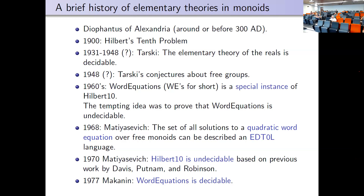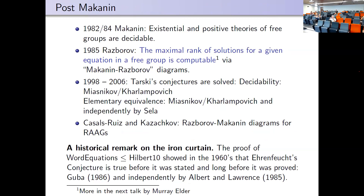Matiasevich had never heard of EDT0L — the notion wasn't defined yet — but if you look at his proof, that's really the first simple case where you can show the solution set is EDT0L. Then, at age 22, he proved Hilbert's Tenth is undecidable, using work of Davis, Putnam, and Robinson — he himself called it the MDPR theorem. This was the Cold War, and the Soviets were very eager to have a young person prove this.